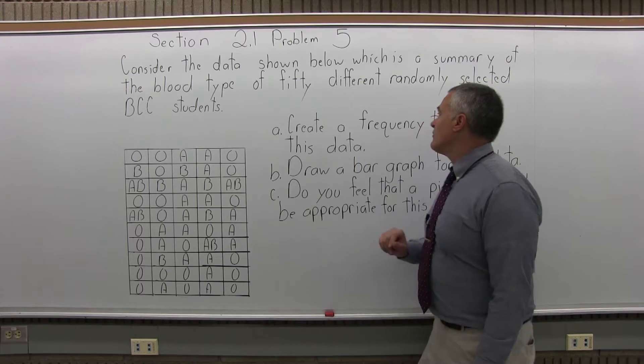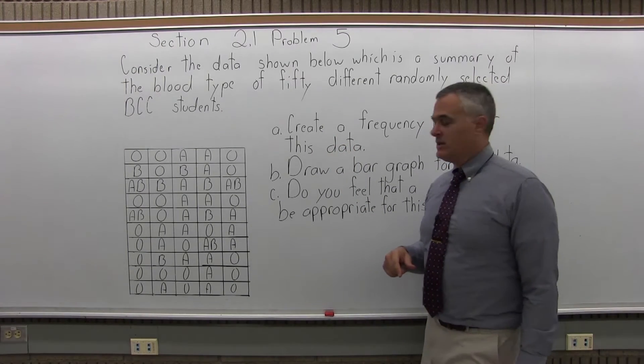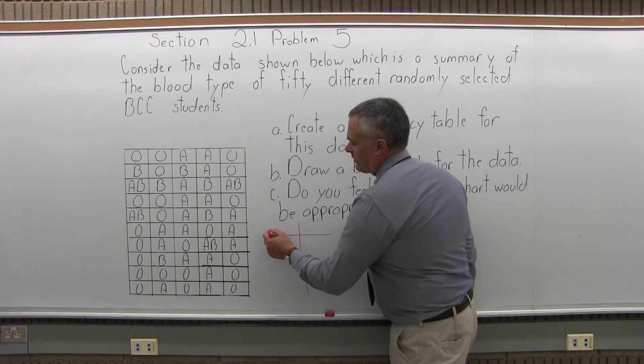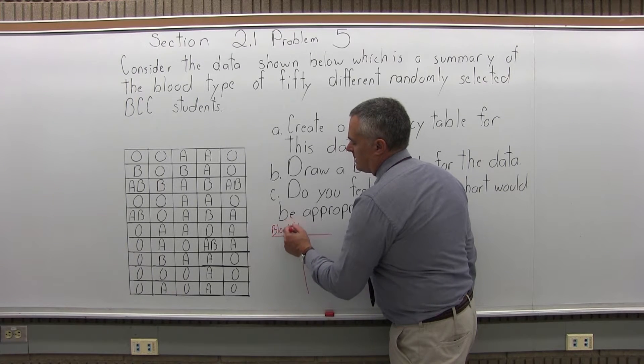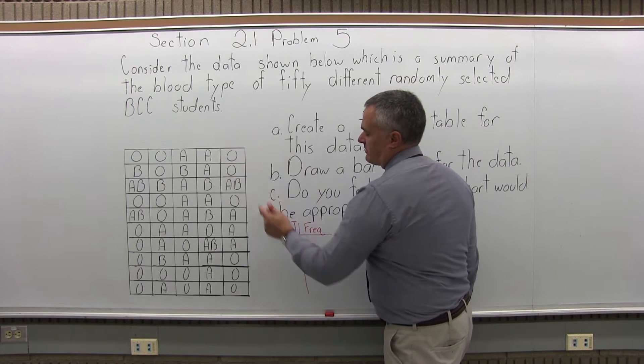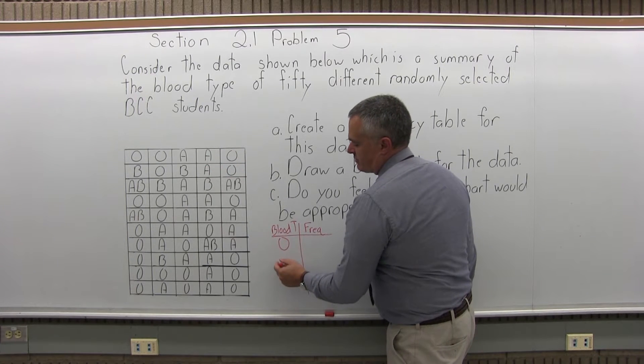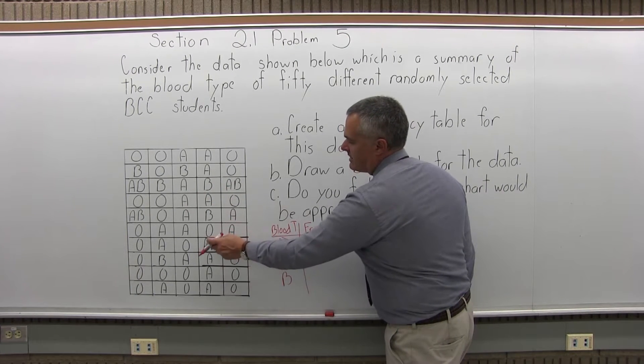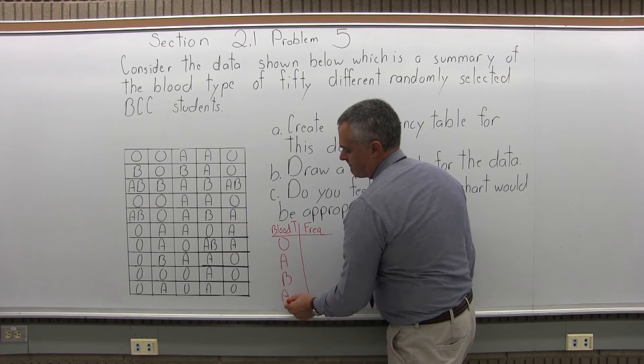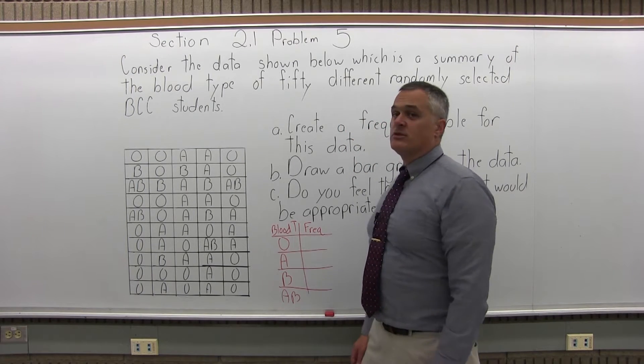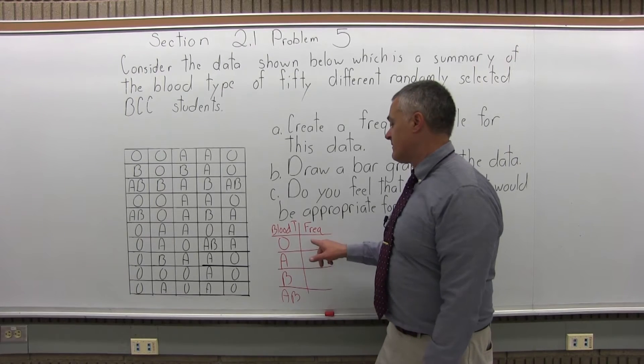Part A says create a frequency table for this data. So our frequency table, we're going to make a little chart with blood type and frequency. One blood type that shows up pretty frequently is O, A shows up pretty frequently, B is in there, AB is in there and that's it for our chart. Now what we have to do is systematically go through and count the number of occurrences of each blood type.